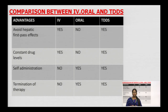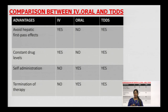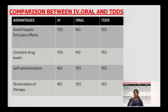In the comparison part, our Transdermal Drug Delivery System provides many advantages over the intravenous route and oral route. For example, hepatic first-pass metabolism can be avoided with TDDS but not oral. Constant drug levels can be obtained from both TDDS and IV but not oral. Self-administration is possible with oral and TDDS but not IV. Termination of therapy when toxic effects occur is possible with oral and TDDS but not IV. So looking at every parameter, the transdermal drug delivery system works better overall.